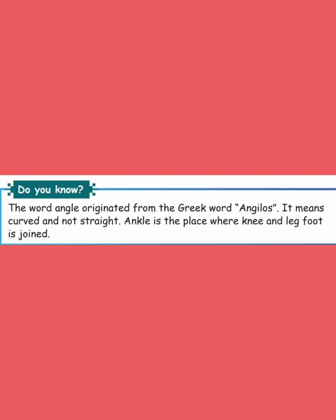The word 'angle' comes from a Greek word 'anglios'. The Greek word means curved, bending, or bent. It is also related to the word 'ankle', which is the joint where the leg and foot are joined — where the neck and foot are joined, that joint is called an ankle.